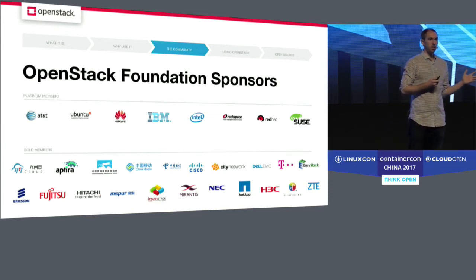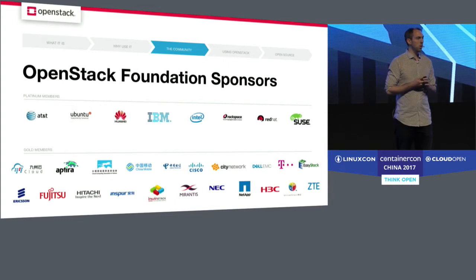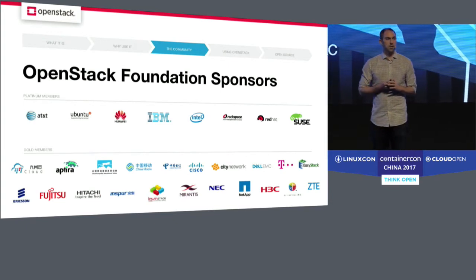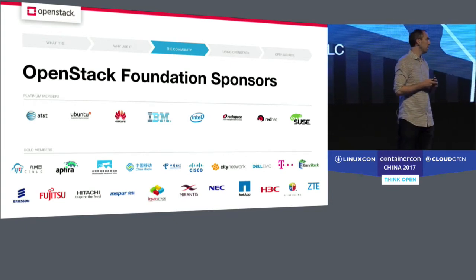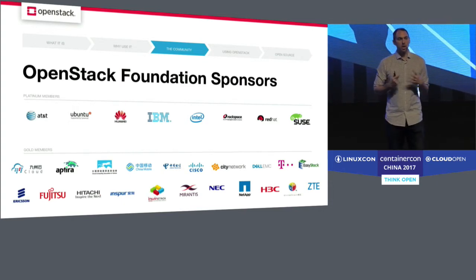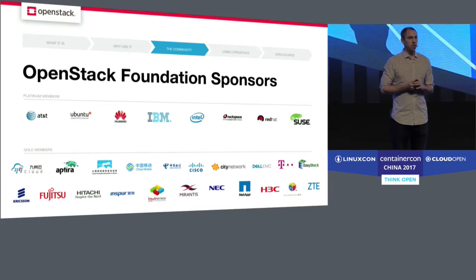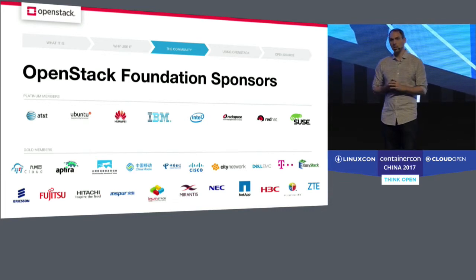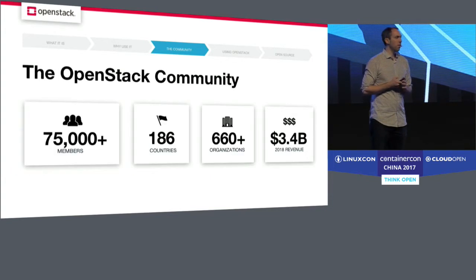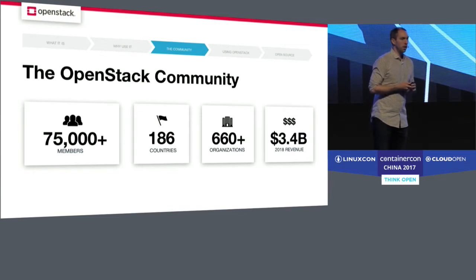We also have a number of startup companies here in Beijing and Shanghai who have created new businesses around OpenStack. Companies like EasyStack recently raised 50 million US dollars in venture funding, and they're based here in Beijing. UnitedStack, 99Cloud, and others, as well as very big companies like ZTE and H3C. So the China community within OpenStack is very strong and growing, and overall it's a very large global community.